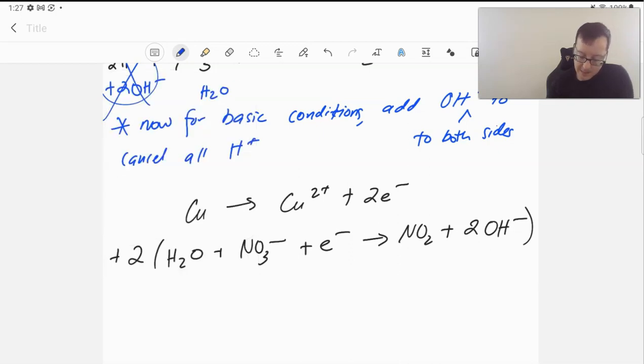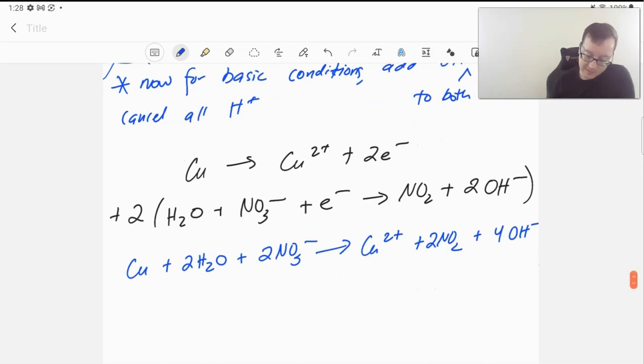It looks like we're going to need two of that second equation so that our electrons cancel out. We can add them now. So we have copper plus two waters plus two nitrates. I'm not going to write the electrons because they cancel out. We get copper 2+ plus two NO2 since we multiplied that equation by two, plus four OH-. Everything should be nicely balanced, and we have our answer.